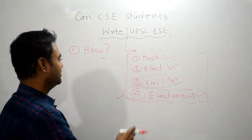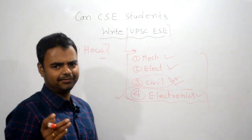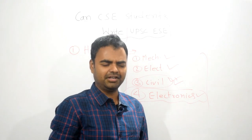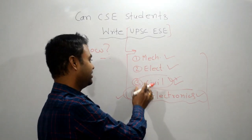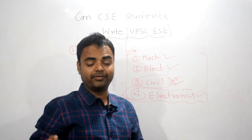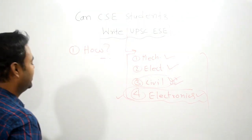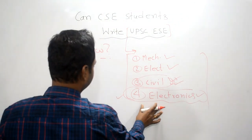Civil Engineering has maximum number of vacancies every year. And these branches, I mean Mechanical, Electrical and Electronics, have a little bit less vacancies. There is a huge gap between vacancies among these three and Civil Engineering. Civil Engineering has maximum number of vacancies in UPSC.